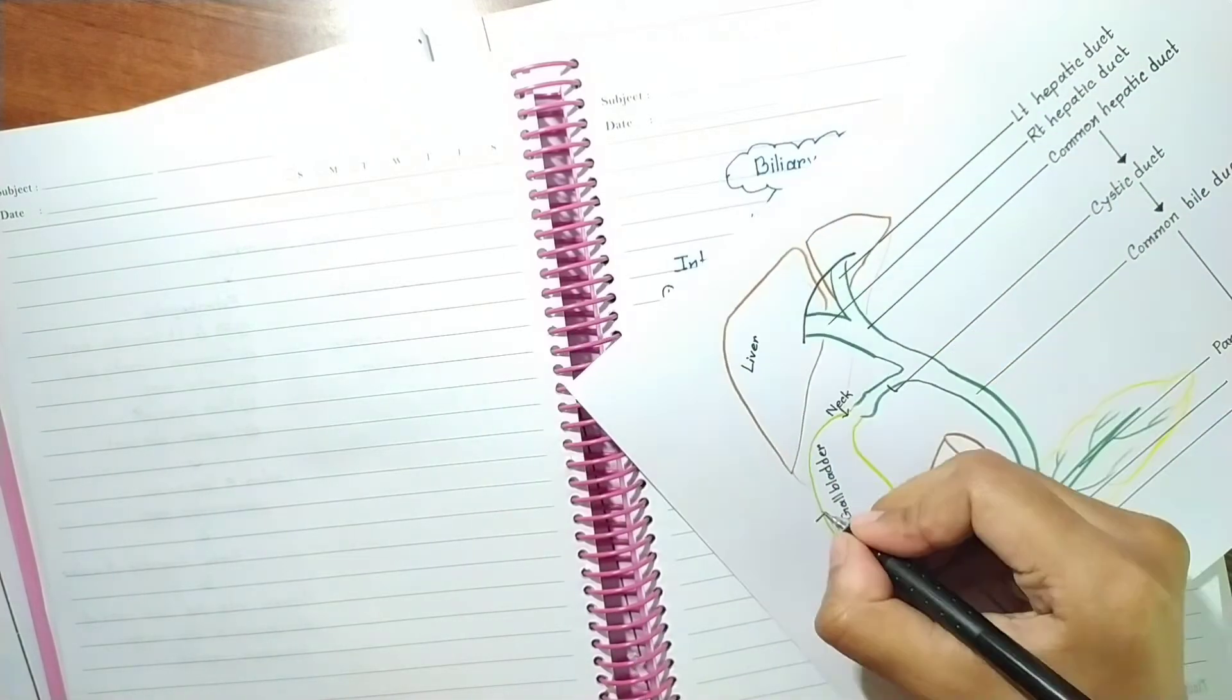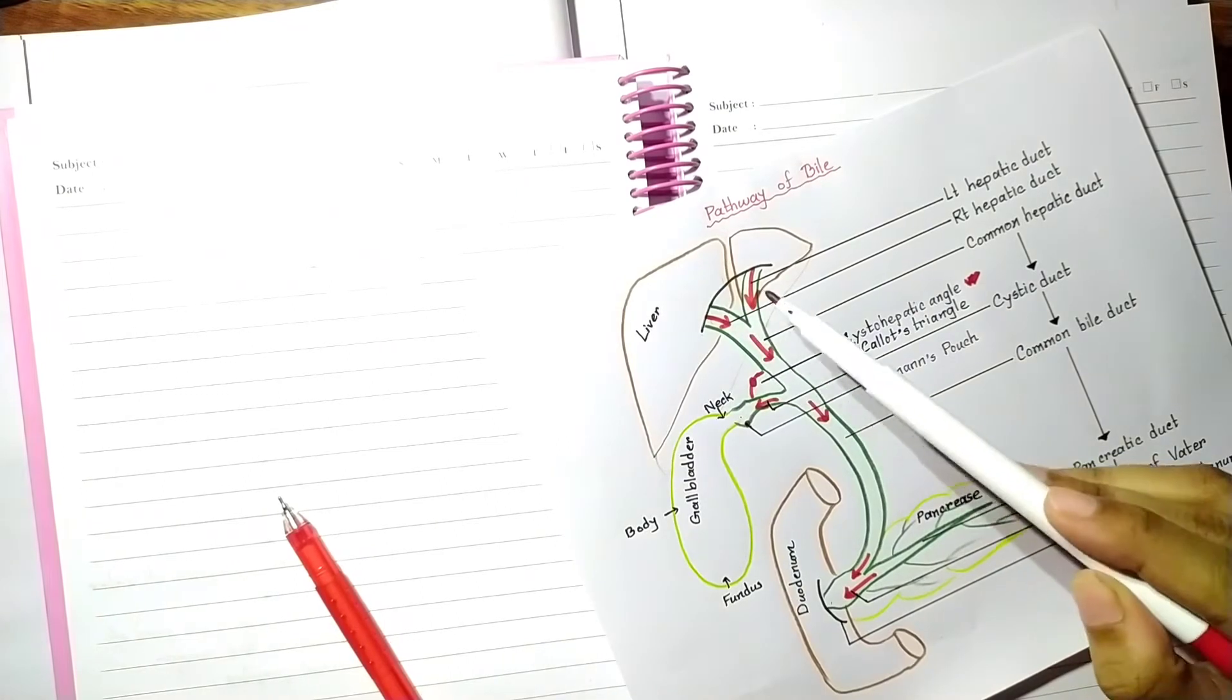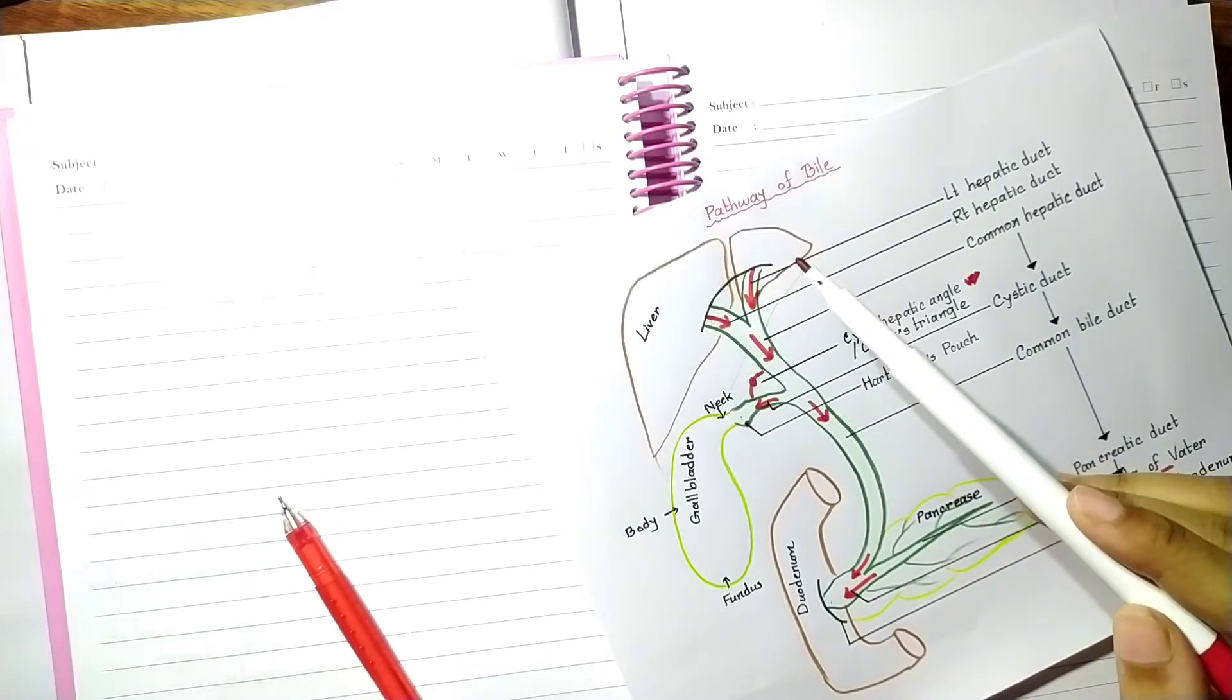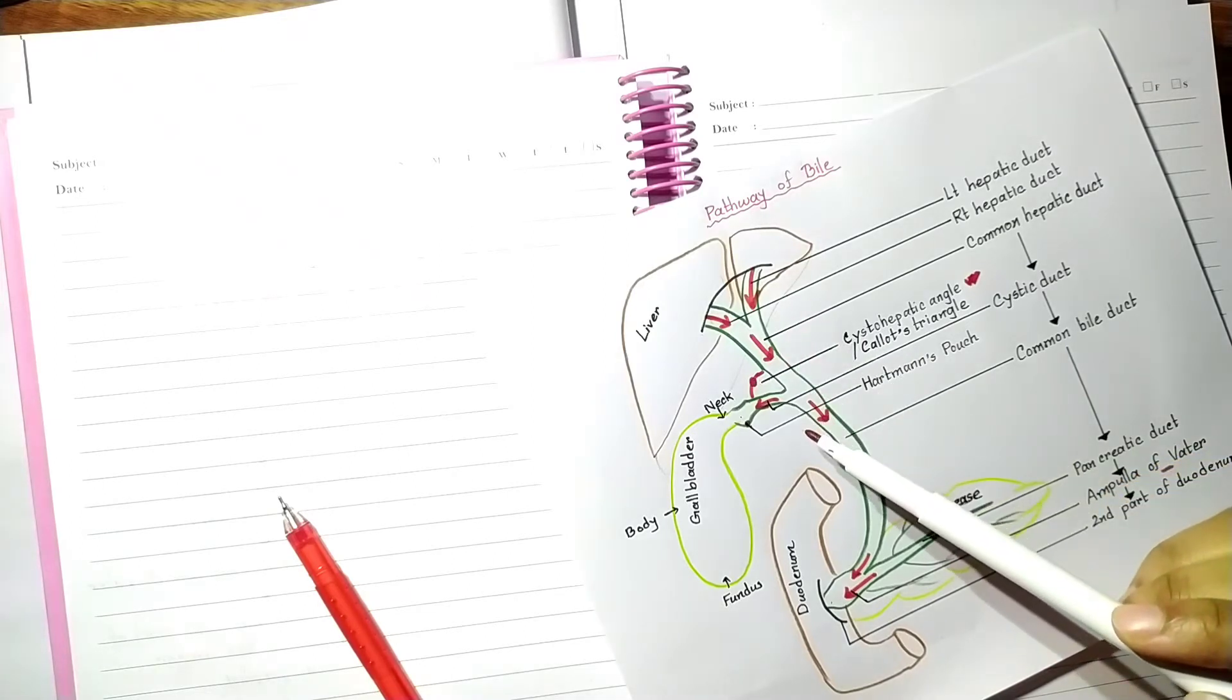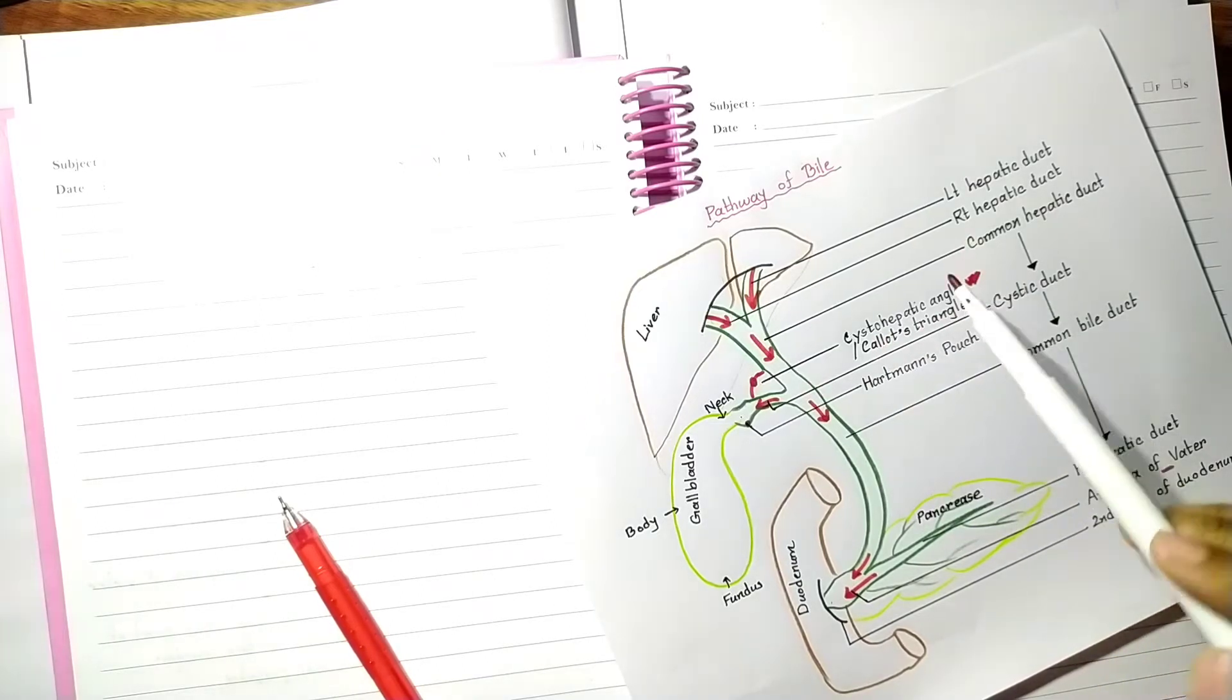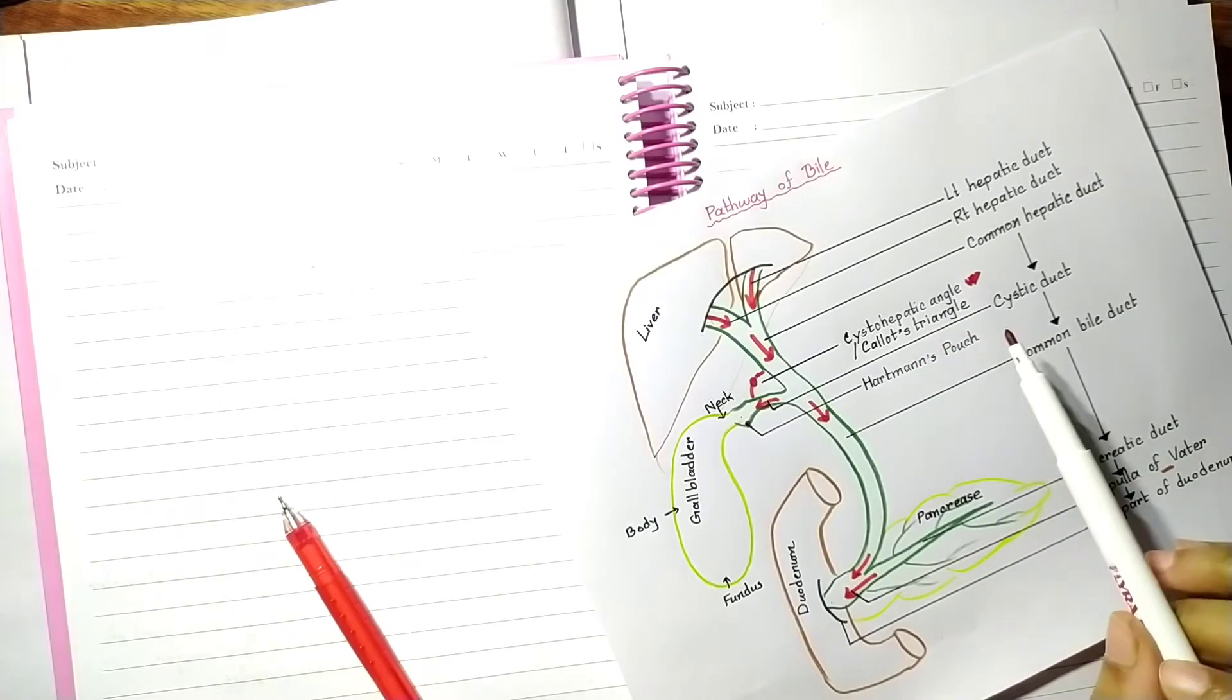This is the outline of bile pathway. The right and left hepatic ducts from the right and left lobes of the liver emerge through porta hepatis and unite near its right end to form a common hepatic duct, then joined on its right side by the cystic duct. The angle between the cystic duct and common hepatic duct is called Calot's triangle or cystohepatic angle. Identification of this angle is an important prerequisite for surgeons before putting ligatures to the pedicles of gallbladder.